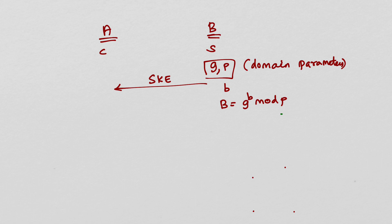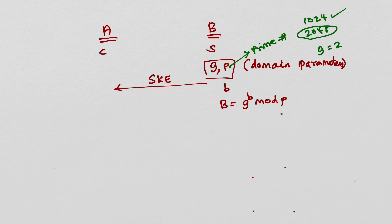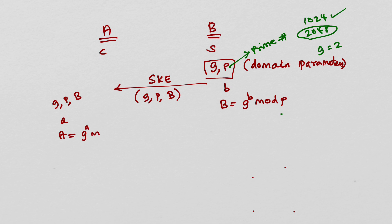P is a very long prime number — typically 1024-bit, 2048-bit or higher. The most safe number of bits used today is 2048, even though some software still supports 1024-bit. G is typically the integer 2 for certain mathematical reasons, though other values are also possible. G and P are called domain parameters. Bob sends G, P, and his public key B in the server key exchange message. Alice receives G, P, and B, generates her own private key a, and calculates her public key A = G^a mod P. She sends her public key A in the client key exchange message.